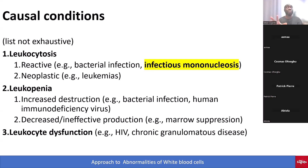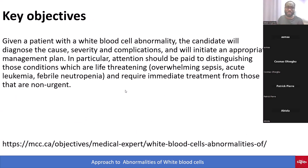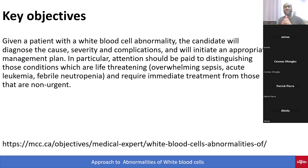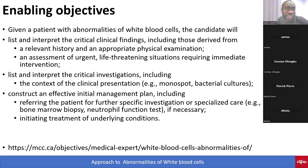With the causal conditions alone, you have at least ten topics to review before leaving this objective. The key objective states: given a patient with white cell abnormality, the candidate will diagnose the cause, the severity, and the complications, and will initiate an appropriate management plan. Particular attention must be paid to distinguishing life-threatening conditions — like overwhelming sepsis, acute leukemia, and neutropenia — requiring immediate treatment from non-urgent ones. Strong emergency medicine knowledge is essential.